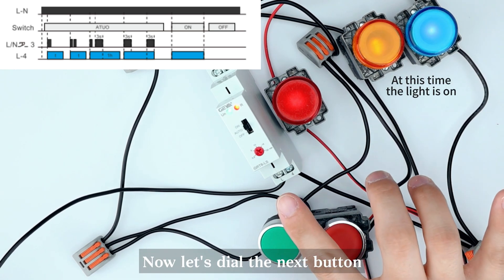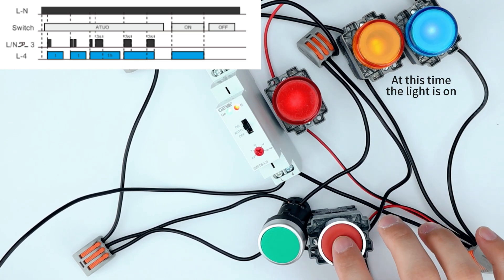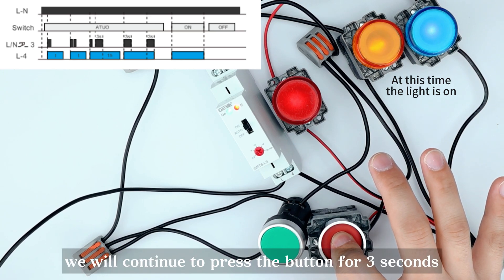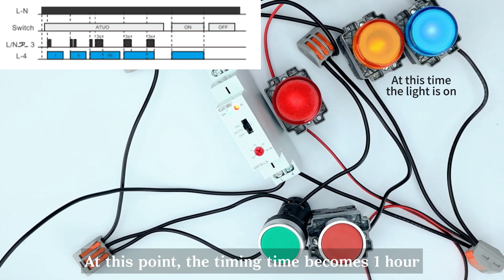Now let's dial the next button. After the light is on, we will continue to press the button for 3 seconds. At this point, the timing time becomes 1 hour.